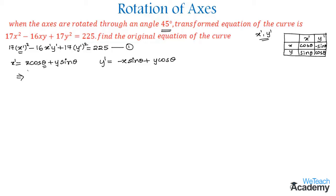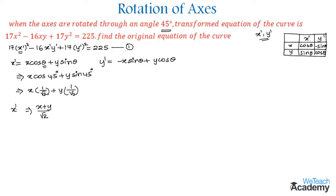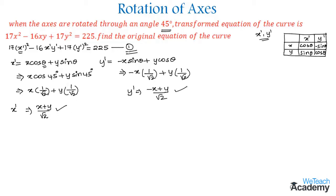Substituting θ = 45 degrees: x' equals x cos 45° plus y sin 45°, which gives x' equals x times (1/√2) plus y times (1/√2), so x' equals (x plus y) divided by √2. For y', we get minus x sin 45° plus y cos 45°, giving y' equals (minus x plus y) divided by √2.